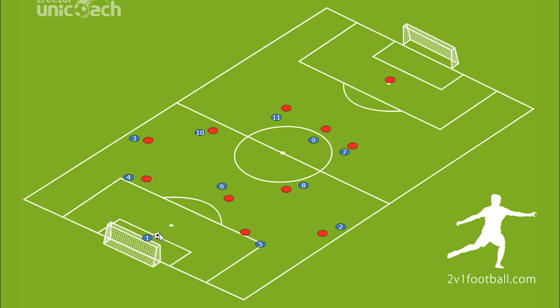So as you can see, the 4-3-3 formation gives you a lot of opportunities to play out from the back, thanks to the many passing lanes available. This formation also gives you a lot of answers and possibilities to counter the opponent's tactics. I showed many of my ideas in my video about playing out from the back in 4-3-3 — you can see a link to that video at the top of your screen right now.